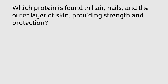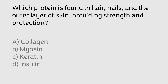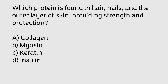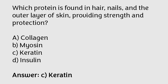Which protein is found in hair, nails and the outer layer of skin providing strength and protection? Collagen, myosin, keratin, insulin. The correct answer is option C. Keratin protein is found in hair, nails and the outer layer of skin providing strength and protection.